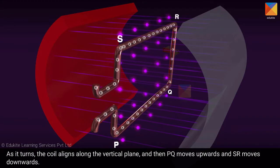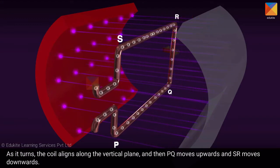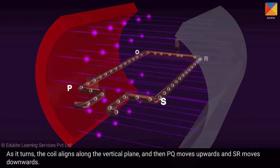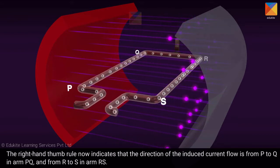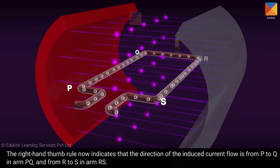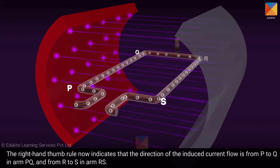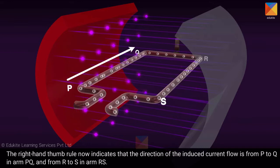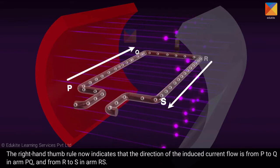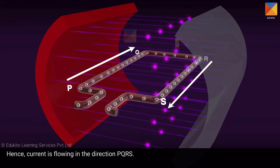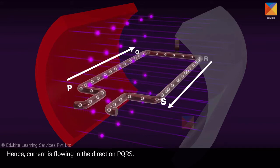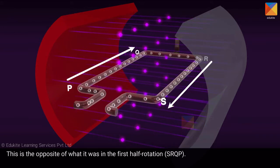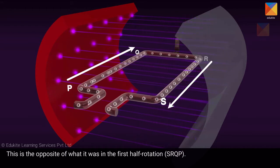As it turns, the coil aligns along the vertical plane, and then PQ moves upwards, and SR moves downwards. The right-hand thumb rule now indicates that the direction of the induced current flow is from P to Q in arm PQ, and from R to S in arm RS. Hence, current is flowing in the direction PQRS. This is the opposite of what it was in the first half rotation, SRQP.